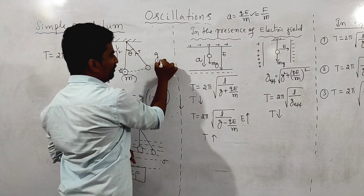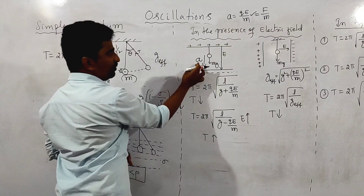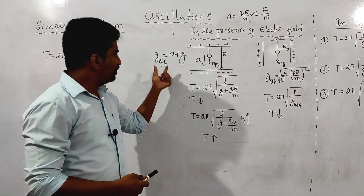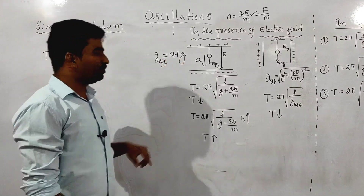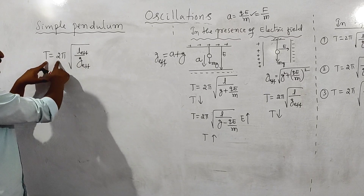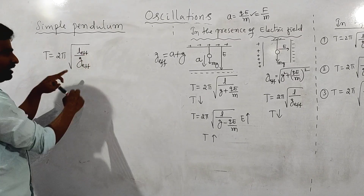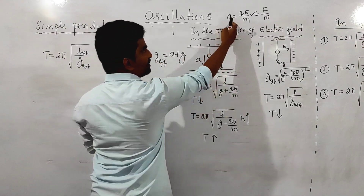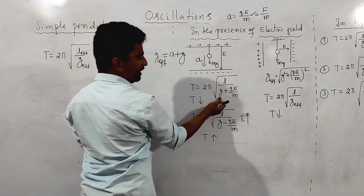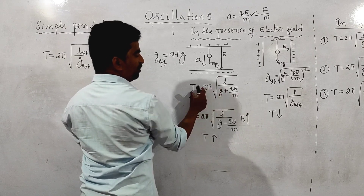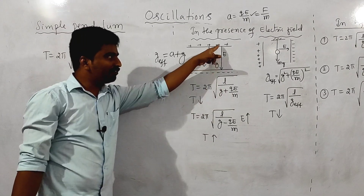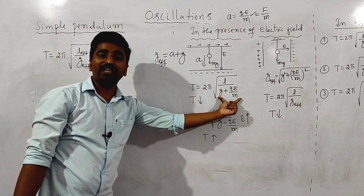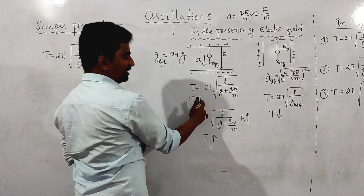So G_effective = G + A when the electric field and acceleration are downward. Time period T = 2π√(L/G_eff), where G_eff = G + A = G + QE/M. Since G increases, the time period decreases when the electric field is downward.